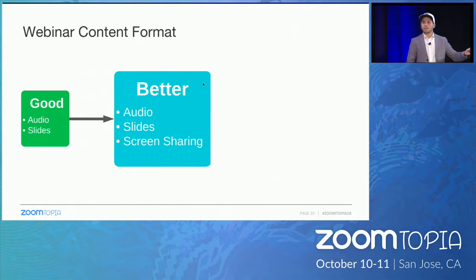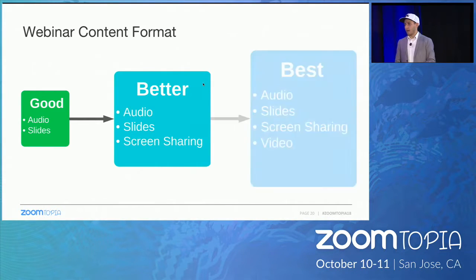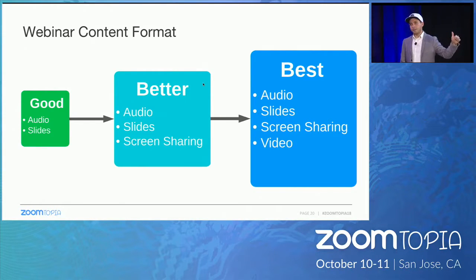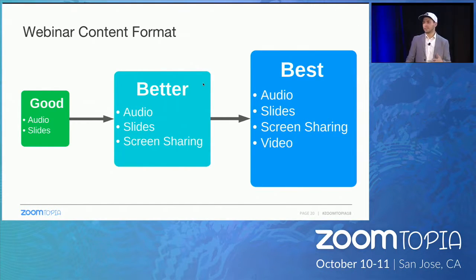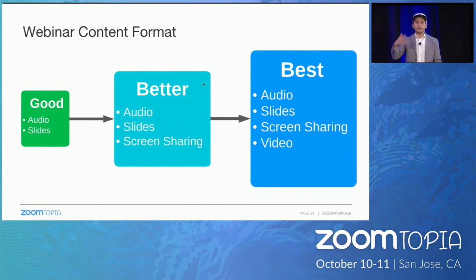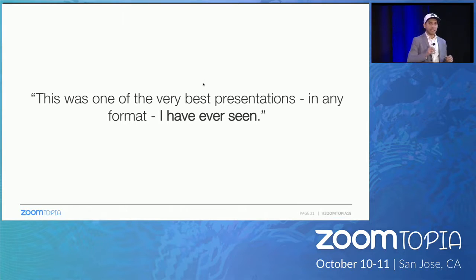But if you really want to kill it — increase engagement, retention, and customer happiness — you want the 'best' category: audio, slides, screen sharing, and video. Video is crucial. Turn it on and show people you're a human being behind the screen. You don't need to look amazing — just turn it on, clean the camera, make sure it's not blurry, set the camera at eye level, make sure the light is in front of you, not behind you. Once we moved to the best category, we got feedback like: 'This is one of the very best presentations in any format I have ever seen.'